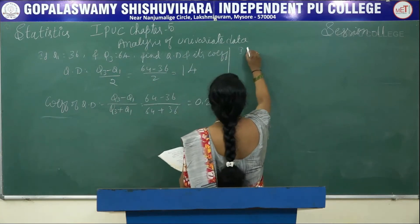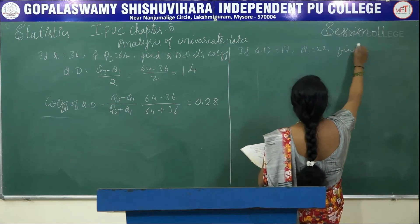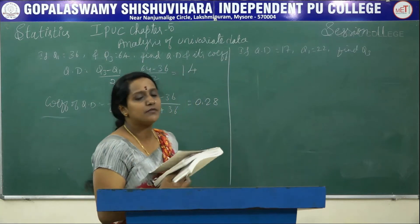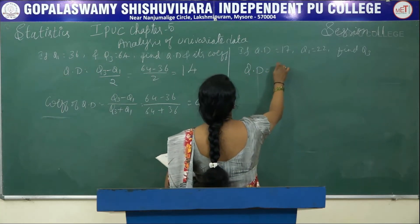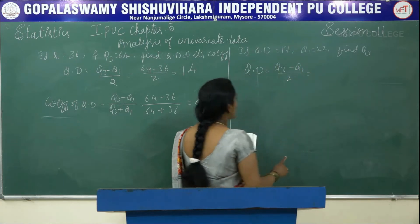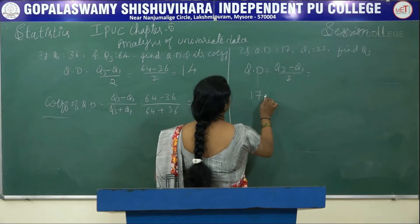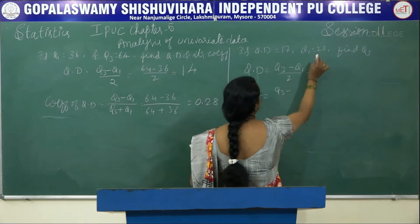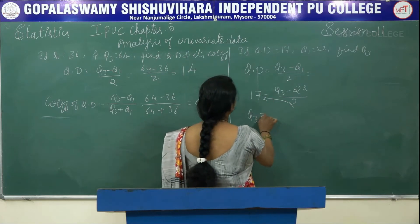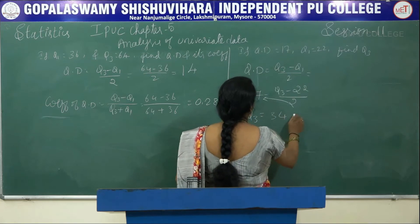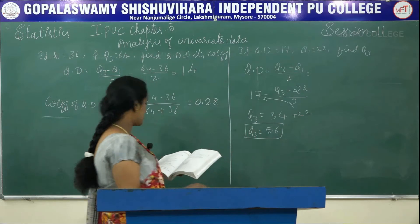Next: if QD is equal to 17 and Q1 is equal to 22, find Q3. Instead of giving Q3, they have given the quartile deviation. We know that QD is equal to Q3 minus Q1 by 2. Substituting: 17 equals Q3 minus 22 divided by 2. Taking cross multiplication, Q3 equals 34 plus 22, so Q3 is equal to 56.